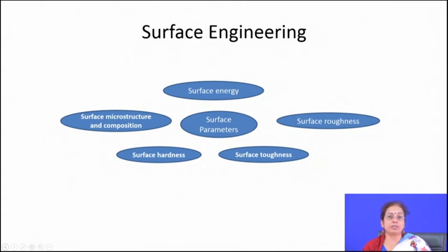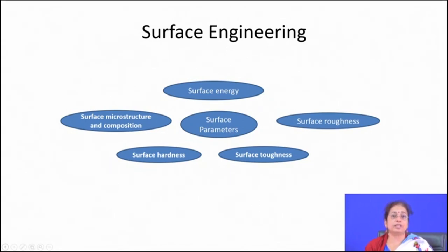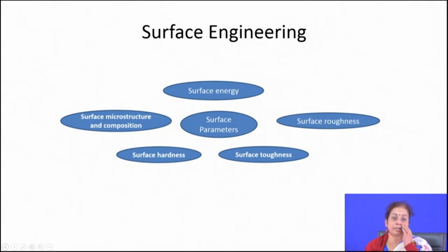Microstructure and composition are very important as they control everything. Uniform microstructure and composition leads to uniform corrosion; non-uniform microstructure leads to galvanic corrosion; precipitates along grain boundaries lead to intergranular corrosion and stress corrosion cracking. Surface hardness is important because it influences erosion-corrosion and stress corrosion behavior. Fracture toughness is another parameter that controls problems like stress corrosion cracking and cavitation corrosion.